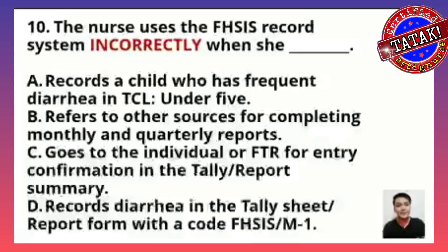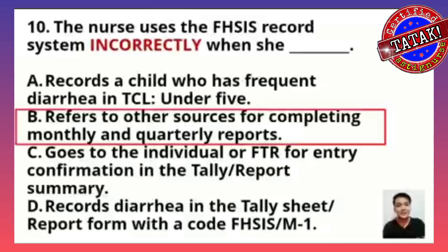Question number ten: The nurse uses the FHSIS record system incorrectly when she: A, records a child with frequent diarrhea in TCL under-5; B, refers to other sources for completing monthly and quarterly reports; C, goes to the individual or FTR for entry confirmation in the TALI report summary; or D, records diarrhea in the TALI sheet report form with code FHSIS M1? The correct answer is letter B — the nurse incorrectly uses the FHSIS record system when she refers to other sources for completing the monthly and quarterly reports.